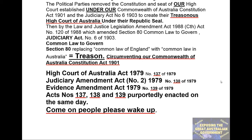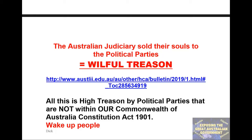So: High Court of Australia Act 1979, No. 137 of 1979; Judiciary Amendment Act No. 2 1979, No. 138 of 1979; Evidence Amendment Act No. 139 of 1979. Acts No. 137, No. 138 and No. 139 were purportedly enacted on the same day. Come on people, please wake up. The Australian judiciary sold their souls to the political parties. Equals willful treason.